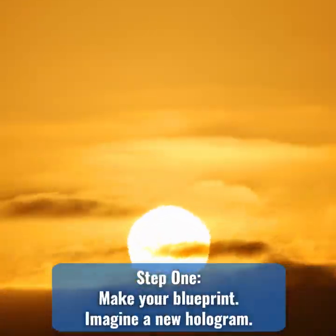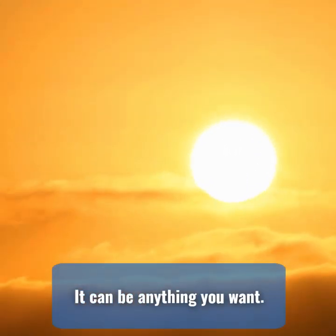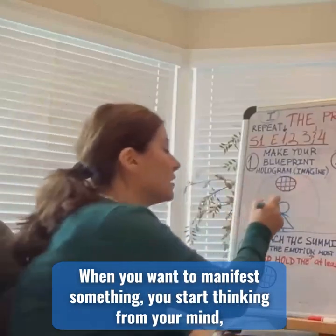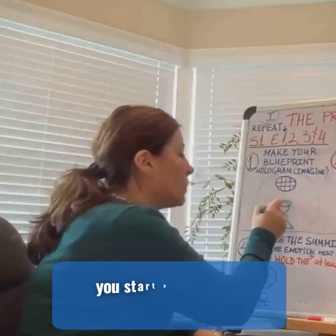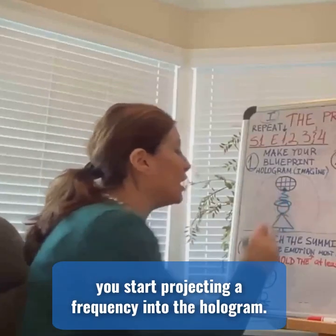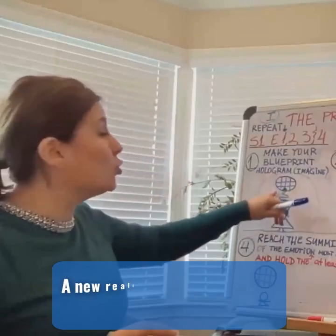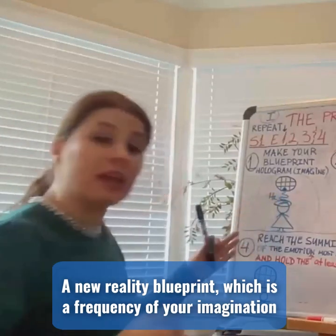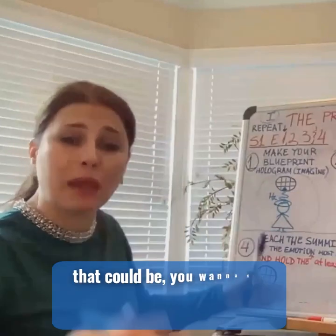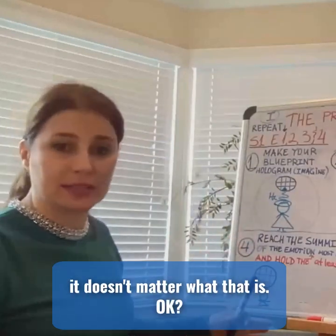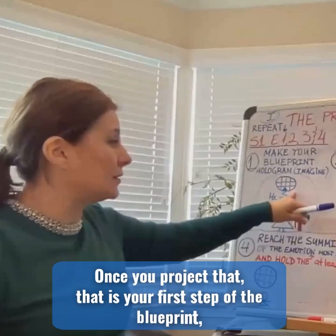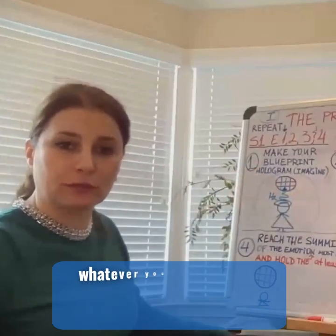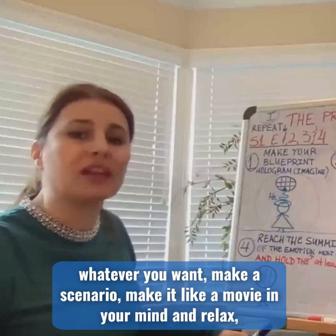Step 1: Make your blueprint. Imagine a new hologram — it can be anything you want. When you want to manifest something, you start thinking from your mind. You start projecting a frequency into the hologram, a new reality blueprint, which is a frequency of your imagination of whatever you want to be. That could be you want to get married, you want to have love, you want to have money. It doesn't matter what that is. Once you project that, that is your first step of the blueprint hologram, whatever you imagine, whatever you want. Make a scenario, make it like a movie in your mind.